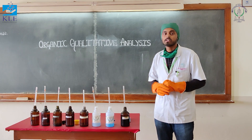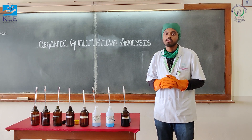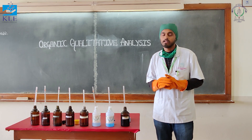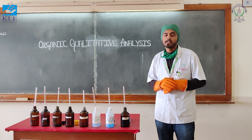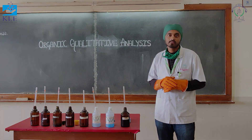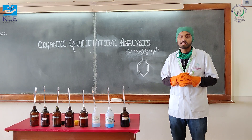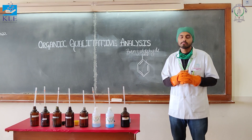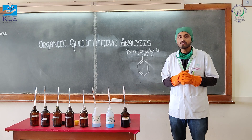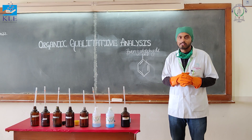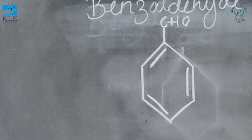For elemental analysis, we need to prepare a stock solution. Take a piece of metallic sodium in a fusion tube, add a little quantity of the given substance, heat it until the bottom becomes red hot, transfer it to a china dish containing distilled water, cover with wire gauze, boil, and filter to get the stock solution. By performing all the qualitative analysis tests, we can conclude that the given compound is benzaldehyde.